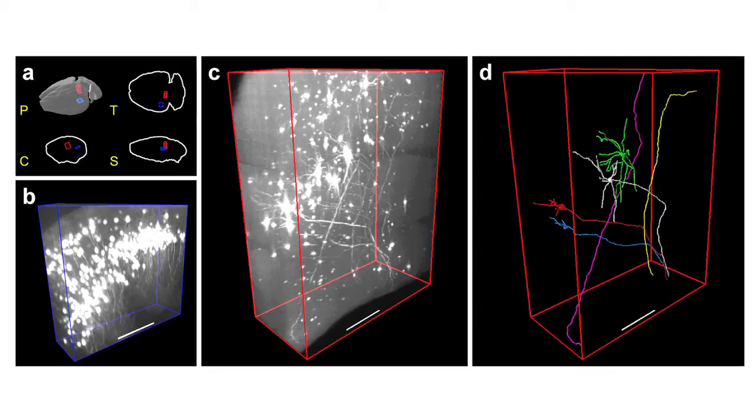We can see the brain using exactly the same principle as computer-assisted tomography. You have the brain, you slice it with a sheet of light, then you observe perpendicularly, move your slice, and rotate the brain. It is exactly the same principle as CT scanning — instead of using radiation, you use photons.